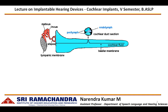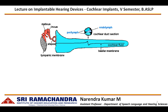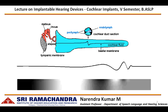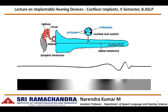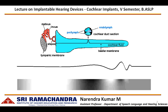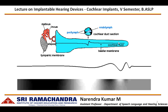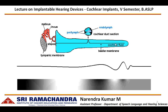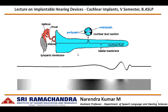The cochlea does two major functions in processing the incoming signals. With the help of a travelling wave, it analyses the frequency of the signal. The frequency is coded in such a way that the travelling wave peaks along the length of the cochlea at specific regions depending upon the incoming frequencies. The low frequencies peak at the apical end of the cochlea whereas the higher frequencies peak at the basal end of the cochlea.